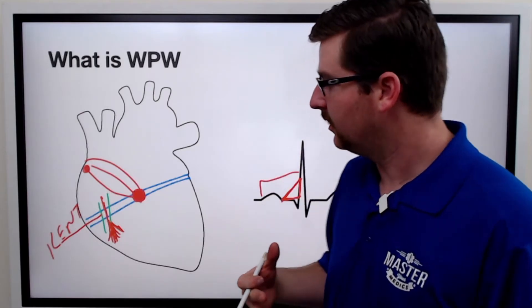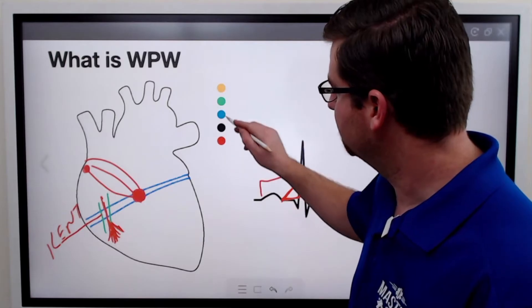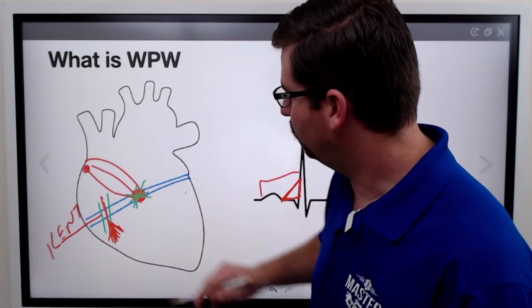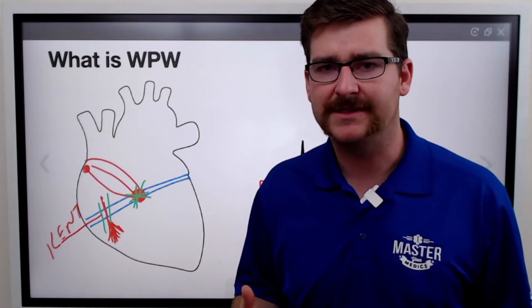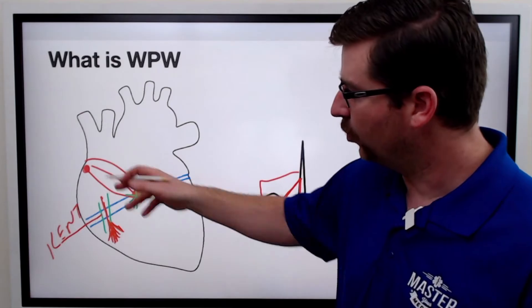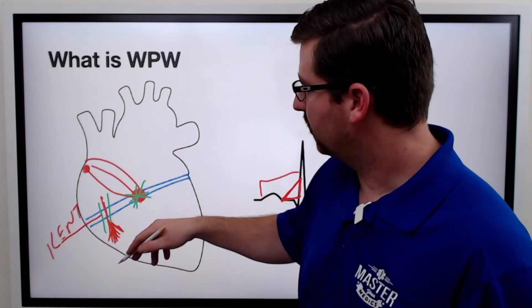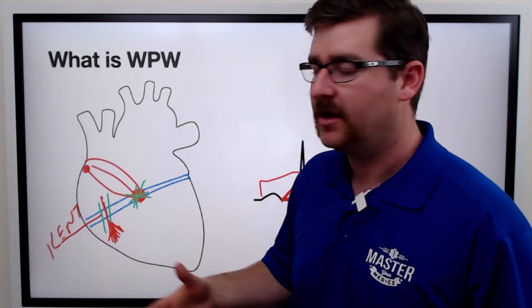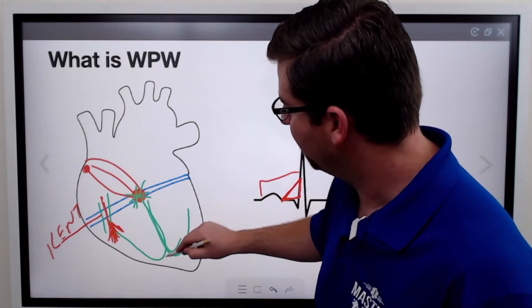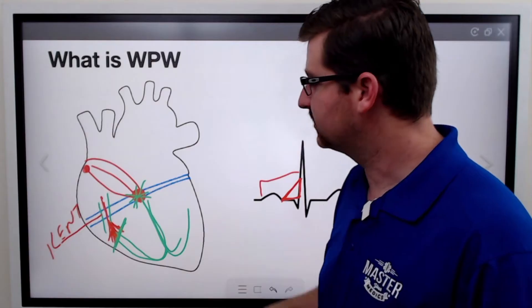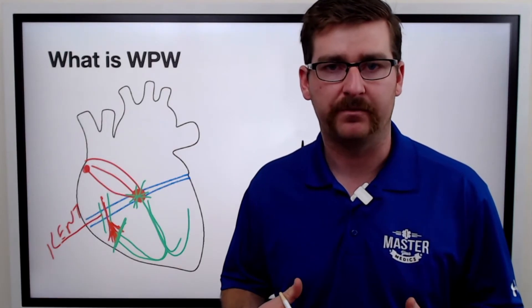What happens if we give adenosine and cut out the AV node for 6 to 10 seconds in WPW? Well, normally it's not going to be a big deal. If you have a normal sinus rhythm above the AV node, a normal rhythm will continue. When the AV node comes back, the electricity is going to log jam as it returns — it will hit and prevent further depolarization of the ventricles through the accessory pathway. It's not a huge deal.